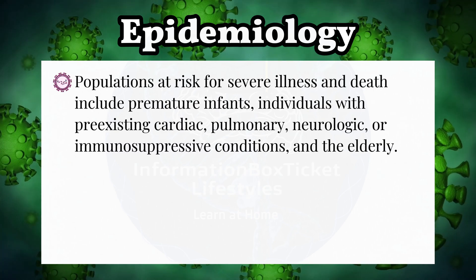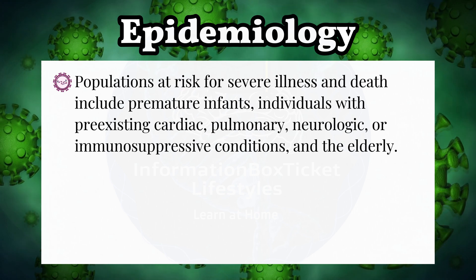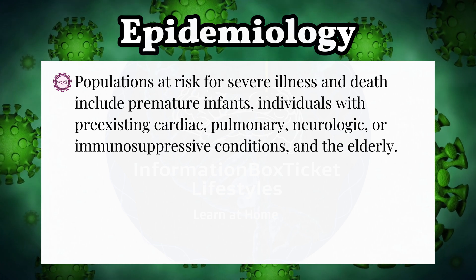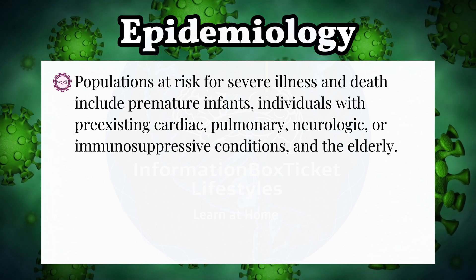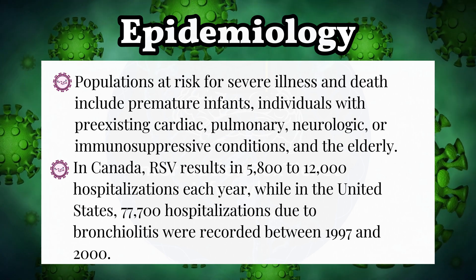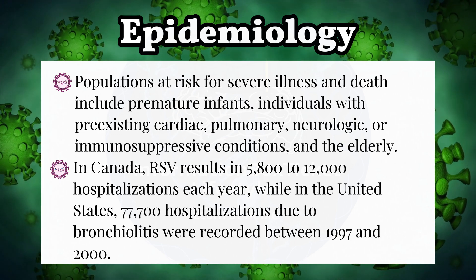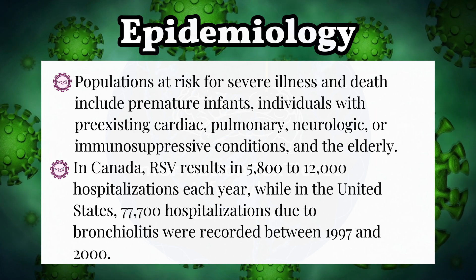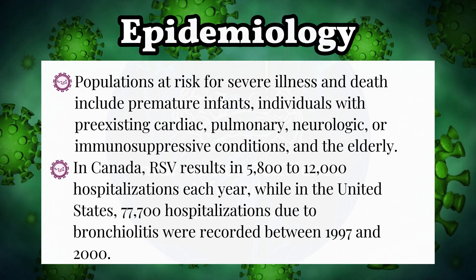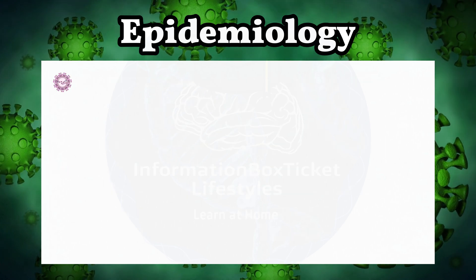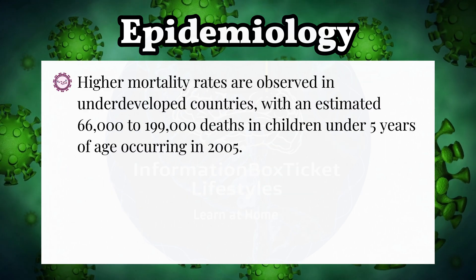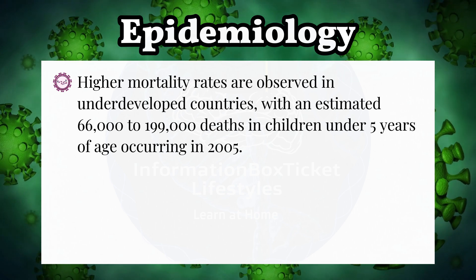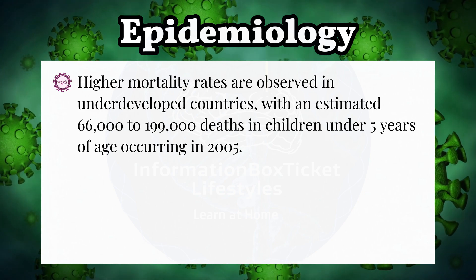Populations at risk for severe illness and death include premature infants, individuals with pre-existing cardiac, pulmonary, neurologic, or immunosuppressive conditions, and the elderly. In Canada, RSV results in 5,800 to 12,000 hospitalizations each year, while in the United States, 77,700 hospitalizations due to bronchiolitis were recorded between 1997 and 2000. Higher mortality rates are observed in underdeveloped countries, with an estimated 66,000 to 199,000 deaths in children under 5 years of age occurring in 2005.